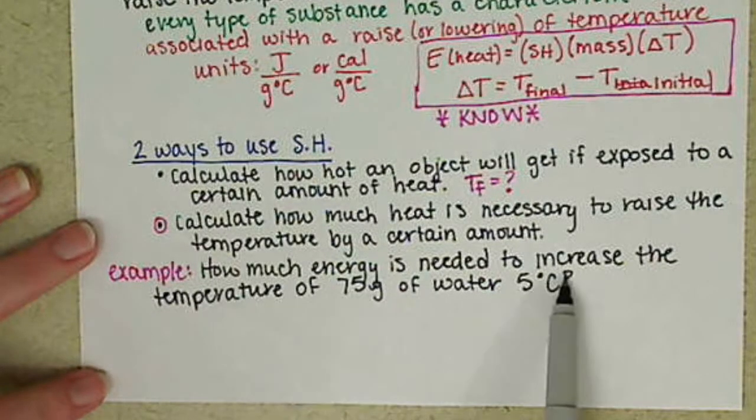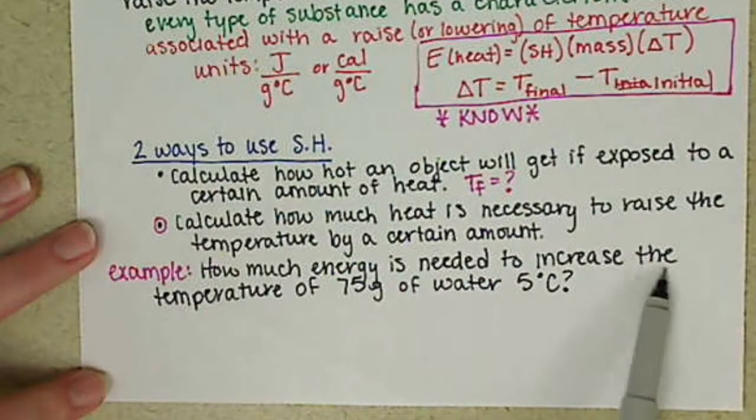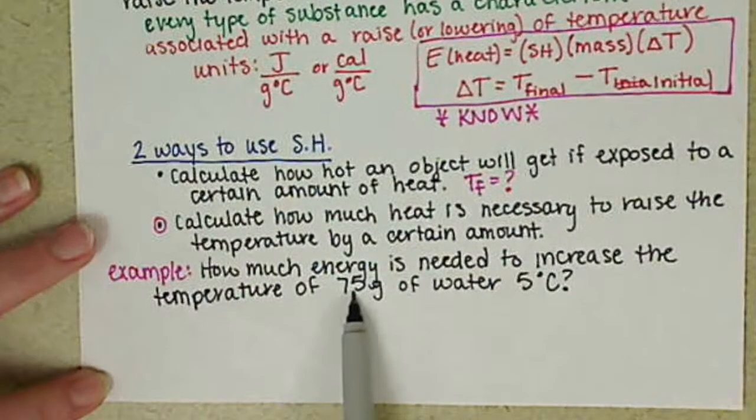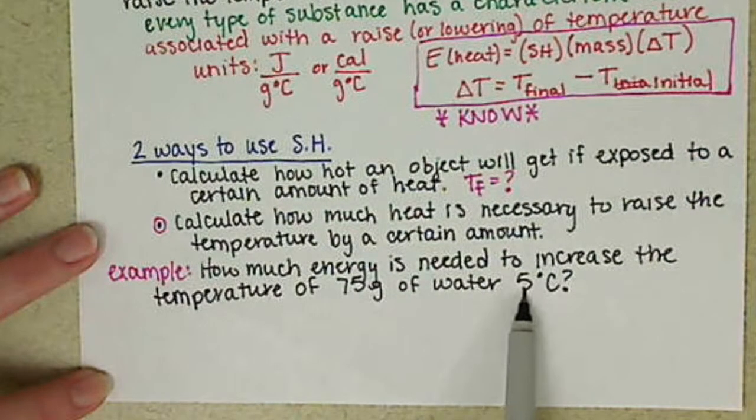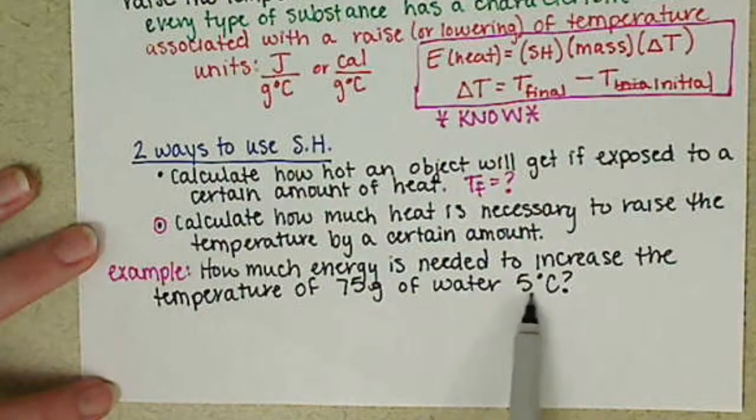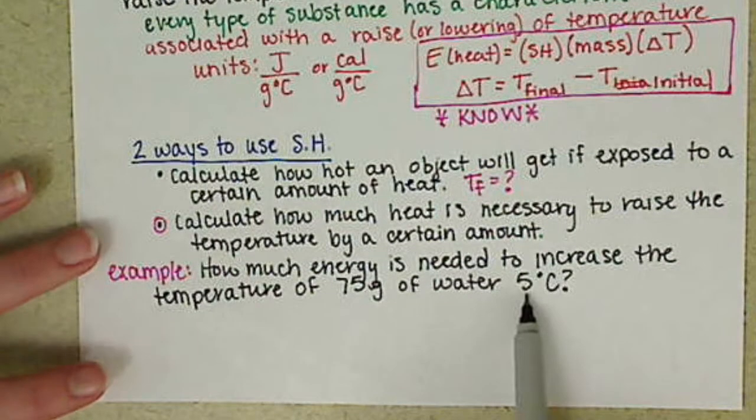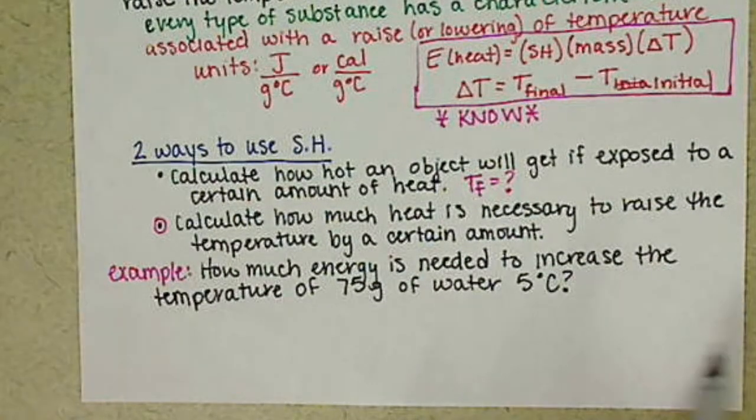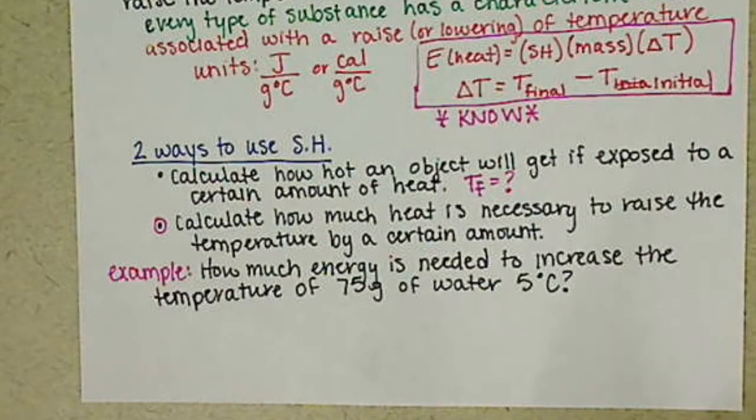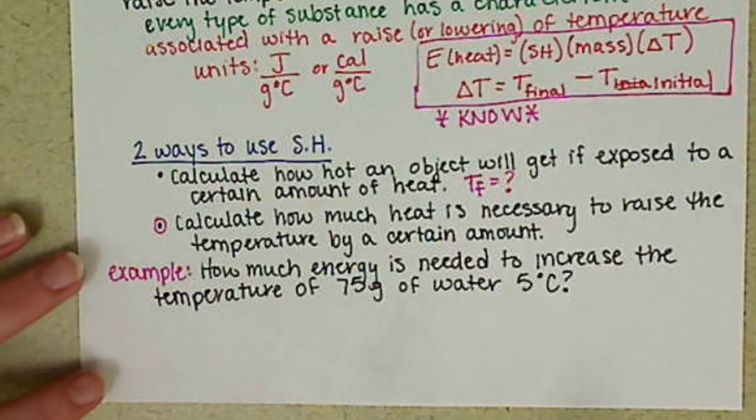So we want to know how much energy is needed to increase the temperature of 75 grams of water by 5 degrees Celsius. So basically we want to increase our temperature 5 degrees Celsius. We don't really care what temperature it's at. We're just going to increase wherever it was at, we're going to add 5 degrees Celsius to that.